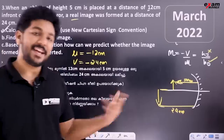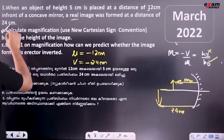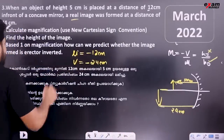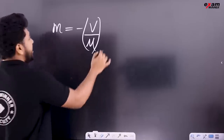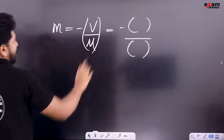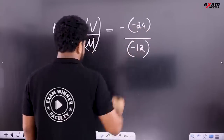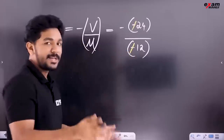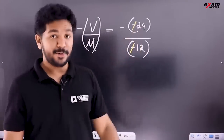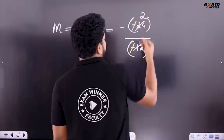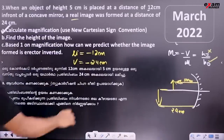We need to find the magnification. We can use V and U in the magnification formula: minus of V by U. Substituting: minus of minus 24 divided by minus 12, that gives minus 2. Magnification is minus 2.